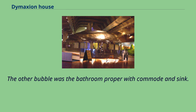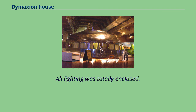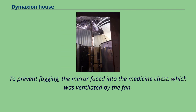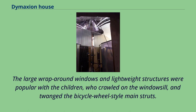The other bubble was the bathroom proper with commode and sink. The ventilation for the bathroom was a large silent fan under the main sink, which kept odors away from people's noses. All lighting was totally enclosed. To prevent fogging, the mirror faced into the medicine chest, which was ventilated by the fan. A plastic version of the bathroom was available intermittently until the 1980s. The large wraparound windows and lightweight structures were popular with the children, who crawled on the windowsill and twanged the bicycle wheel-style main struts.